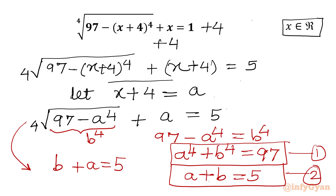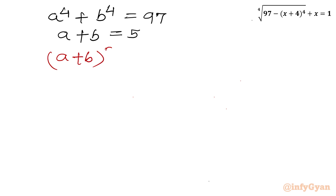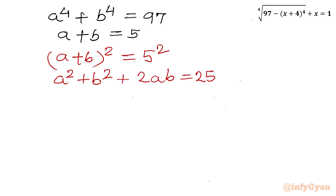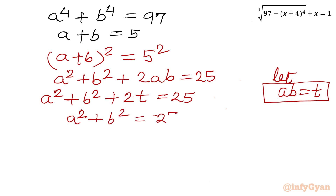We will solve this system where equations are A power 4 plus B power 4 equal to 97 and A plus B equal to 5. Remember our substitution is x plus 4 equal to A. Let's square both sides of equation 2: A plus B whole square equal to 25, which gives A squared plus B squared plus 2AB equal to 25. Let T equal to AB, so A squared plus B squared plus 2T equal to 25, or A squared plus B squared equal to 25 minus 2T.